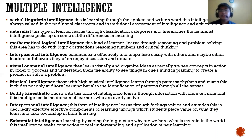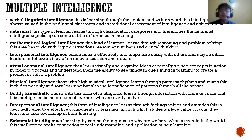Mathematical or logical intelligence: this learner learns through reasoning and problem solving. This area involves logic, abstractions, reasoning, numbers, and critical thinking. Interpersonal intelligence: the ability to communicate effectively and empathize easily with others. Visual or spatial intelligence: these learners learn visually and organize ideas — they see concepts in action in order to process and understand them. This includes the ability to visualize things in one's mind when planning to create a product or solve a problem. Musical intelligence: those with high musical intelligence learn through patterns, rhythms, and music. This includes not only auditory learning but also identification of patterns through all the senses.